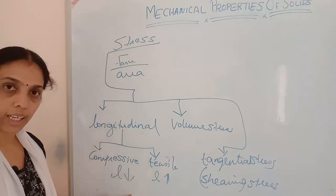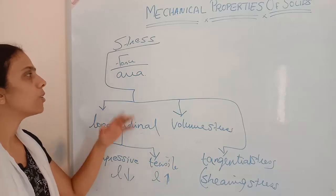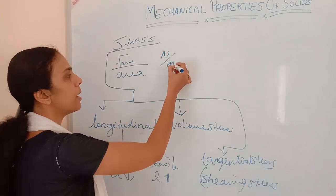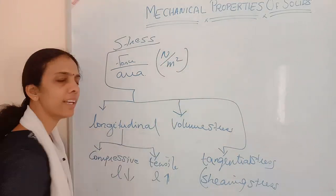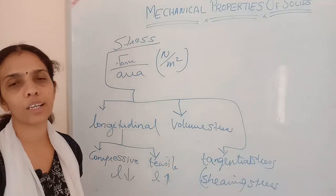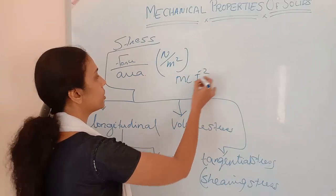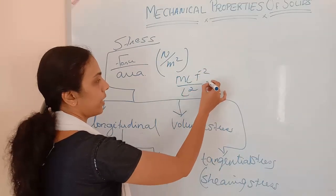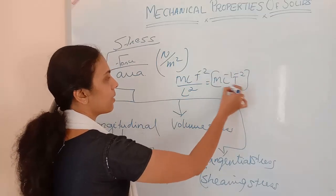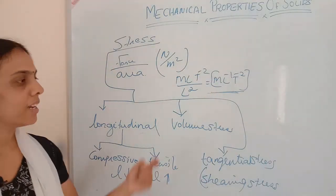Longitudinal stress itself is of two types: compressive stress and tensile stress. Stress is force per unit area, so what will be the unit of stress? Stress is newton per meter square. Stress is a vector quantity and its unit is newton per meter square. The dimension is M L T to the power minus 2 divided by L square, giving M L to the power minus 1 T to the power minus 2. This is the dimension of stress.